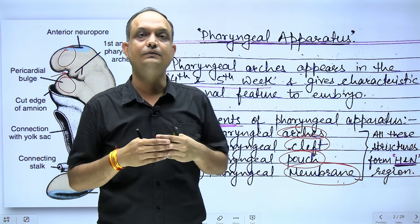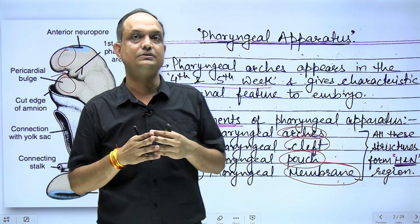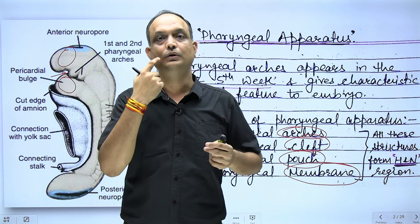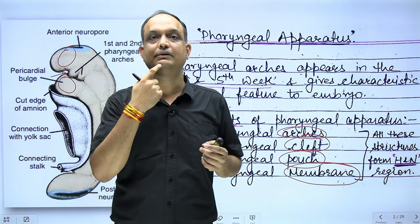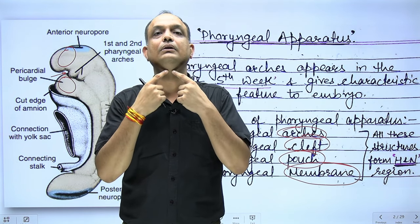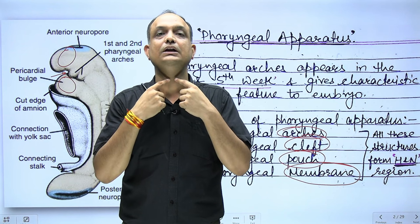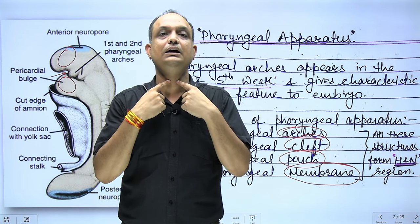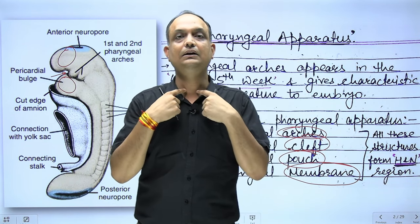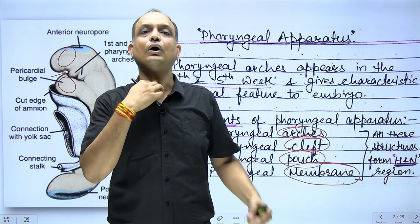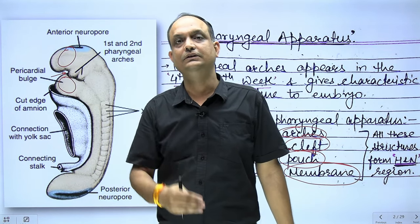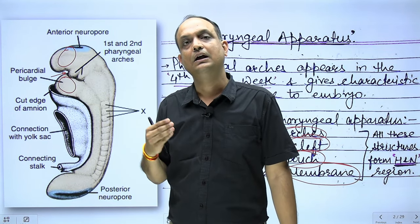Structures in front of the sternocleidomastoid that arise from the pharyngeal apparatus include structures around the stomodeum or oral cavity: maxillary bone, mandibular bone, hyoid bone, thyroid cartilage, cricoid cartilage, thyroid gland, and parathyroid glands.